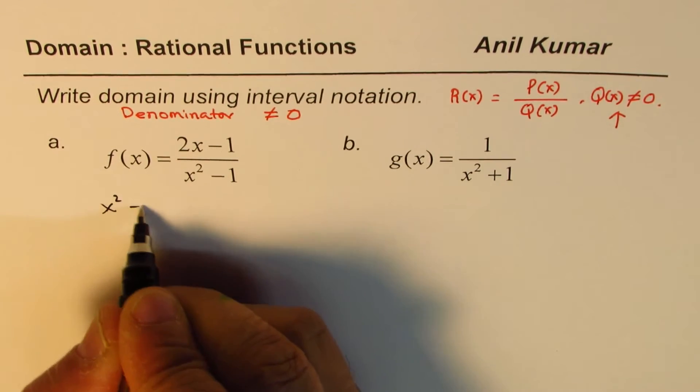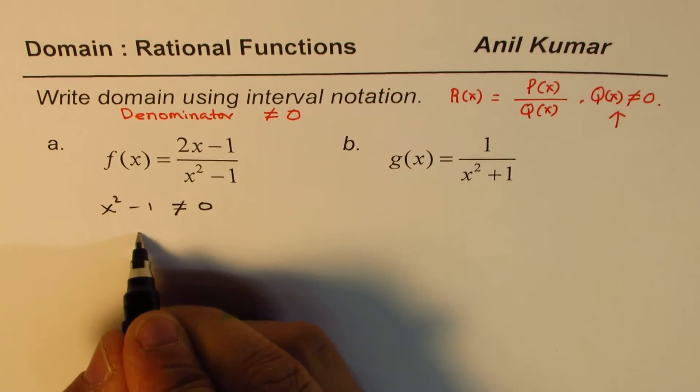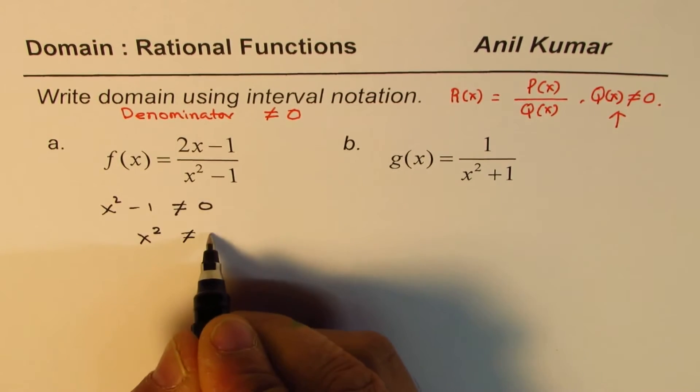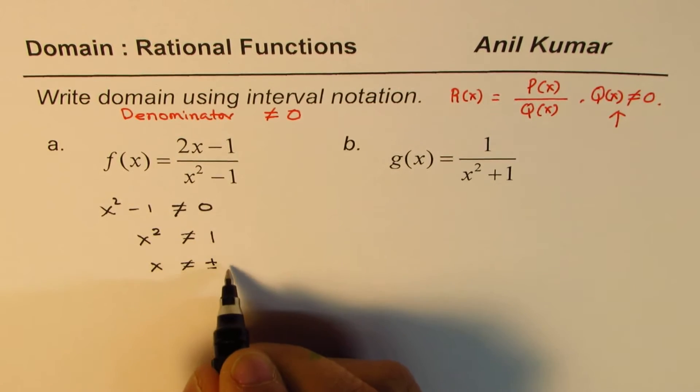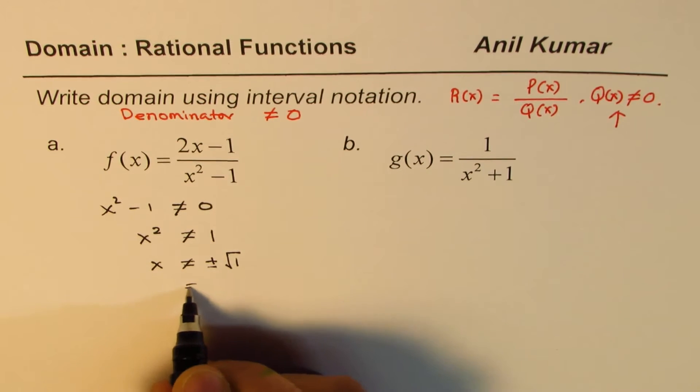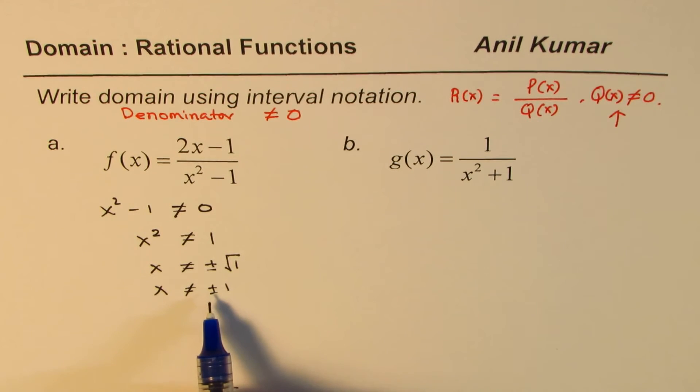It is x square minus 1. That should not be equal to 0. This is what we're trying to figure out. That is to say, x square is not equal to 1, or x is not equal to plus minus square root of 1. So we get our domain, which is everything but plus minus 1.